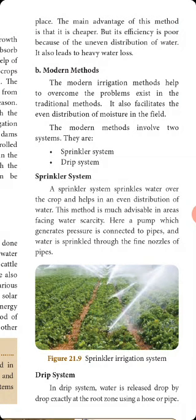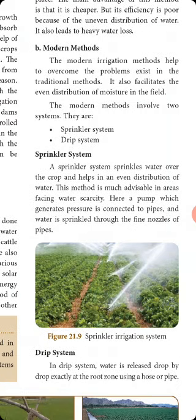The efficiency of traditional methods is poor because of the uneven distribution of water, and it also leads to heavy water loss. The modern irrigation methods help to overcome the problems existing in traditional methods and facilitate even distribution of moisture in the field.